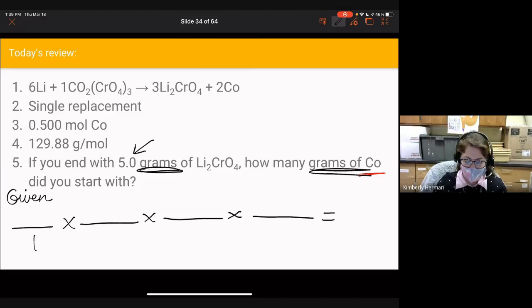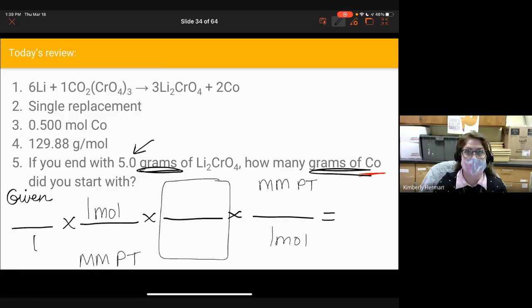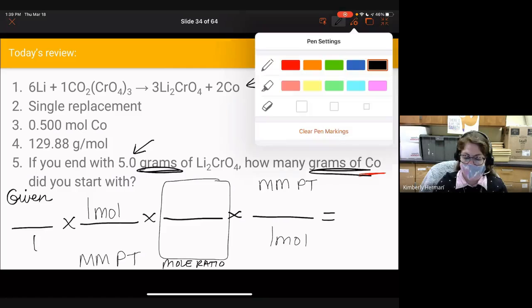Since we're doing grams to grams, we'll see our molar masses at the bottom, which we find from the periodic table. We can actually fill in two spots for our moles because we have molar mass at the beginning and at the end. Remember, our middle step is the mole ratio, which we get from the coefficients in our balanced chemical equation at the top. Let's get started.